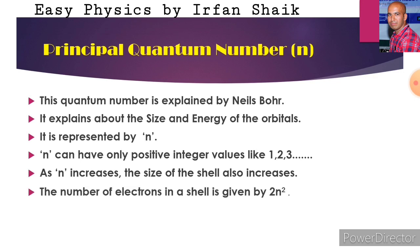The number of electrons in a shell is given by 2n squared. To find the number of electrons in a shell, we use this formula 2n squared. For example, if you want to find the number of electrons in the first shell, substitute 1 in place of n and we get the value 2. So in the first shell, that is the K shell, we have only 2 electrons. If you substitute 2 instead of n, you get 8, meaning the second shell has place for 8 electrons. Like that, to find the number of electrons in a particular shell, we use the formula 2n squared.